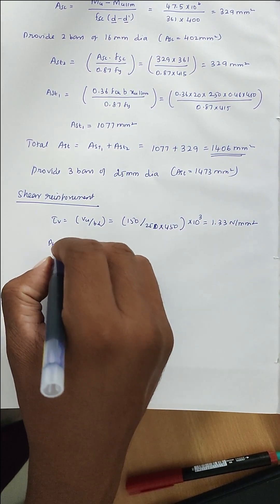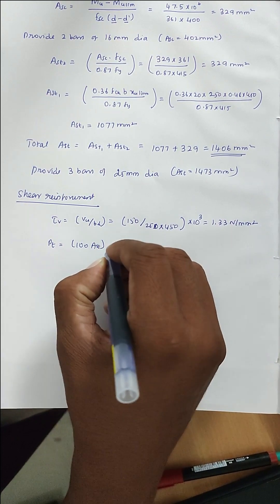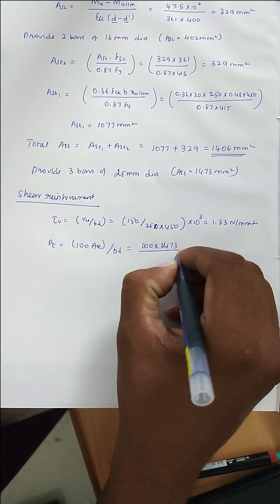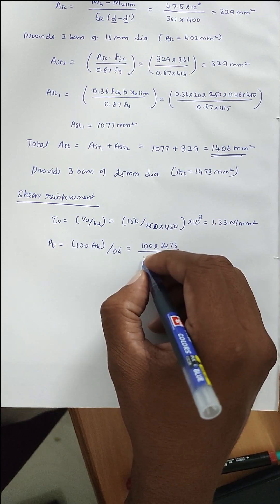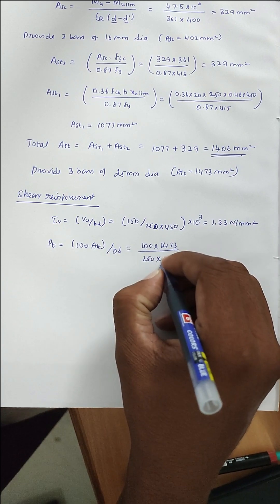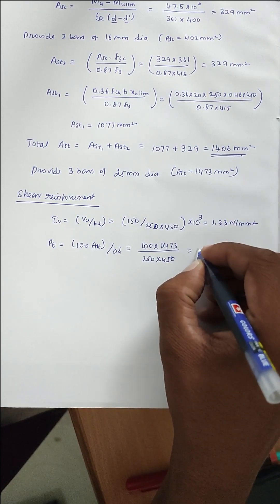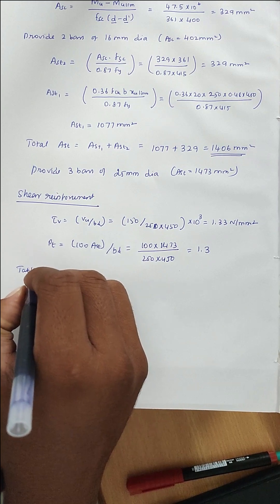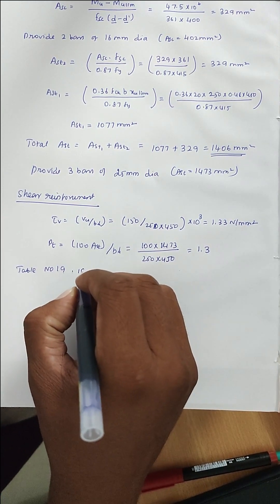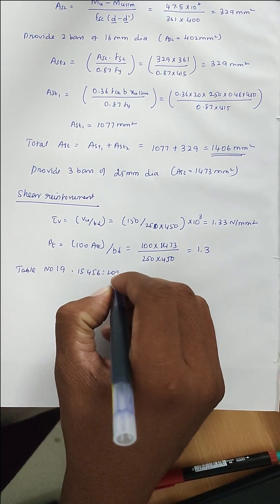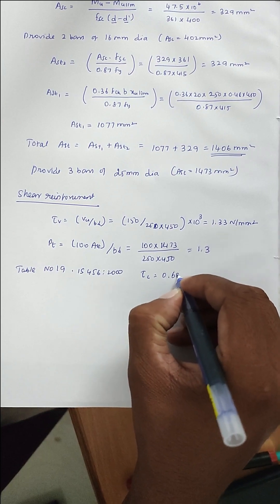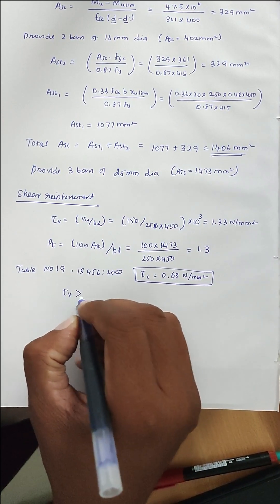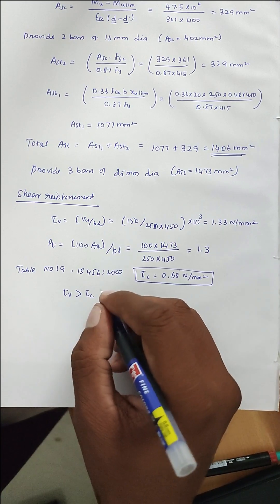Now find Pt: Pt = 100 × AST / (b × d) = 100 × 1473 / (250 × 450) = 1.3%. Referring to Table 19 of IS 456:2000, τc = 0.68 N/mm². Since τv (1.33) is greater than τc (0.68), shear reinforcement is required.